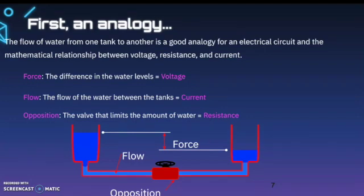Let's take a look at an analogy. The flow of water from one tank to another is a good analogy for an electrical circuit and the mathematical relationship between voltage, resistance, and current. In the image, you can see the difference in the force, flow, and opposition inside of the example. The force is the difference in the water levels, which is equivalent to voltage. The flow of the water between the tanks is equivalent to current. The opposition is the valve that limits the amount of water, and is equivalent to resistance.